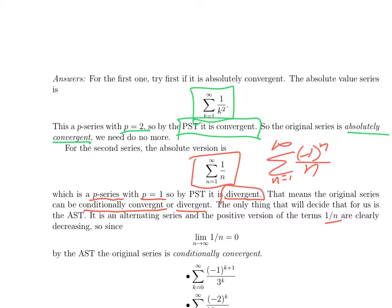And then finally, the sequence of terms converges to 0. 1/n converges to 0. So that means by the alternating series test, the original series is convergent. And since we already checked that it's not absolutely convergent, it's conditionally convergent.